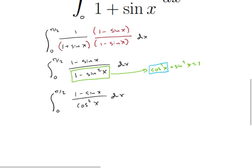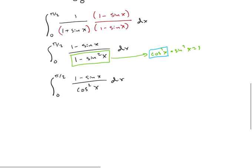Let's check our knowledge about some derivatives here. So I'm going to rewrite this as the integral from 0 to pi over 2 of 1 over cosine squared of x minus sine of x over cosine squared of x dx.